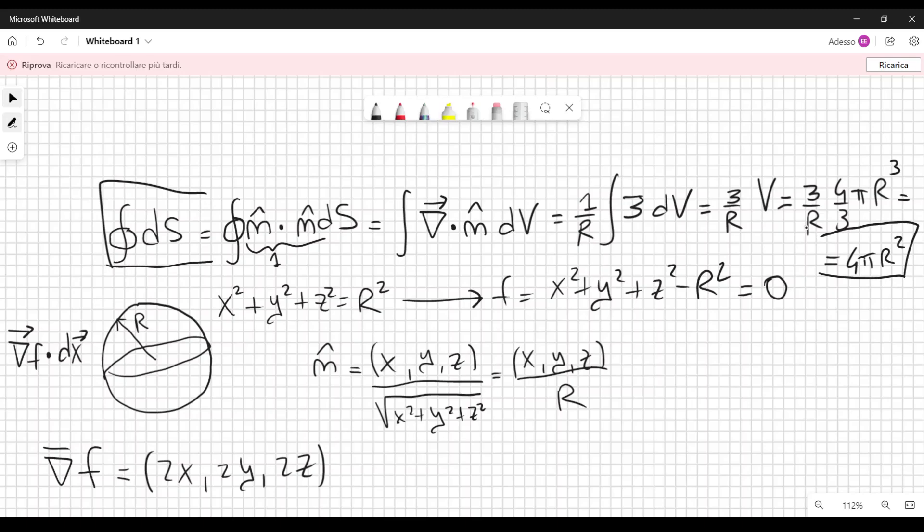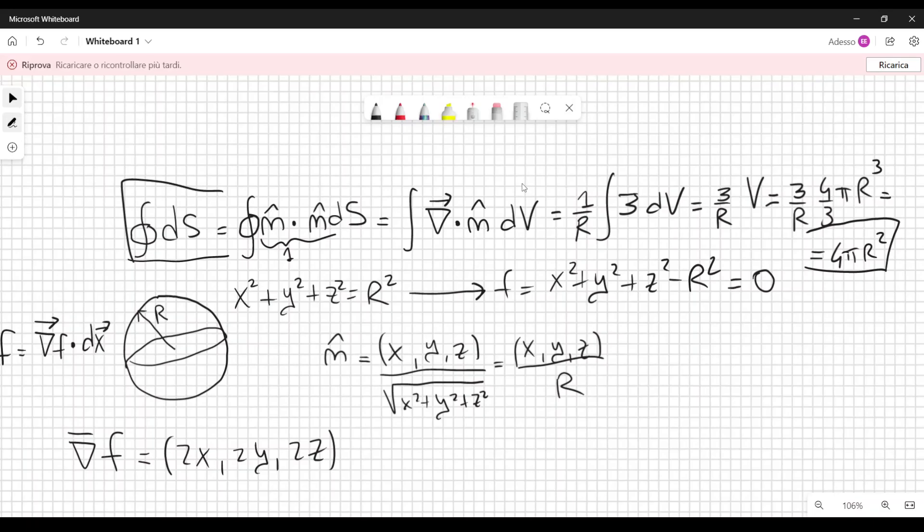And so I think that this exercise was quite useful. We will also do another exercise next time. But in that case, we will calculate by using, still using the divergence theorem, the surface of a cube. And that's going to be more complicated. Because it is not so easy to find the divergence of the normal in that case. And we will see it in a future video. Thank you.